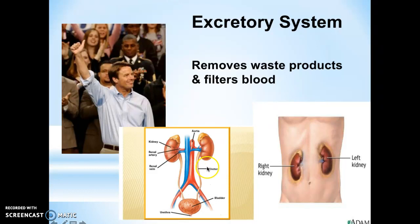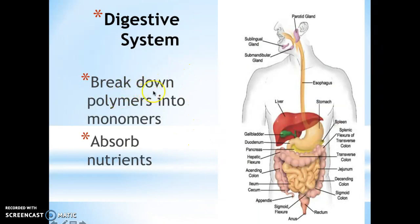The next one is the digestive system, and the main purpose of the digestive system is to break down polymers into monomers, and also to absorb nutrients. It works very closely together with the muscular system because you have smooth muscle throughout your esophagus, small intestine, large intestine, and even stomach. It also works very closely together with the circulatory system so that when you are absorbing nutrients, those nutrients are absorbed through your small intestine into your bloodstream.